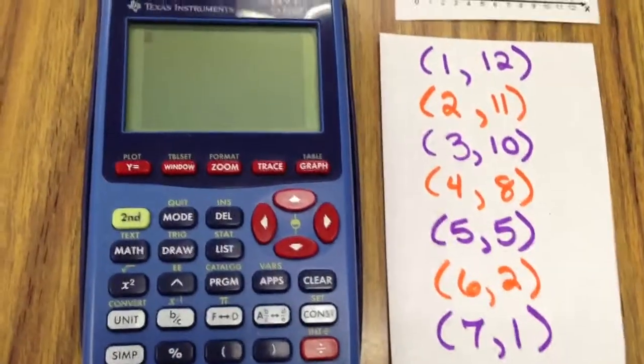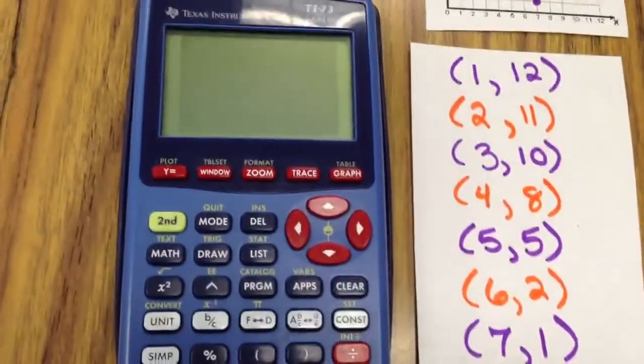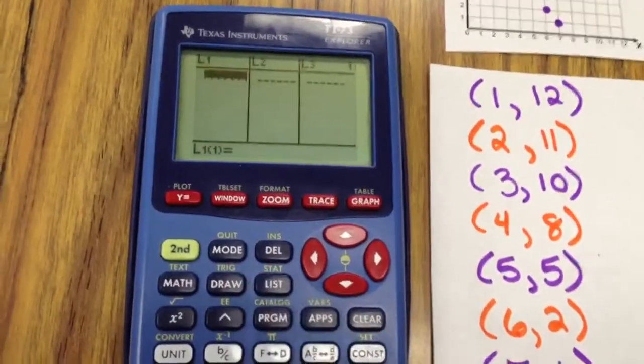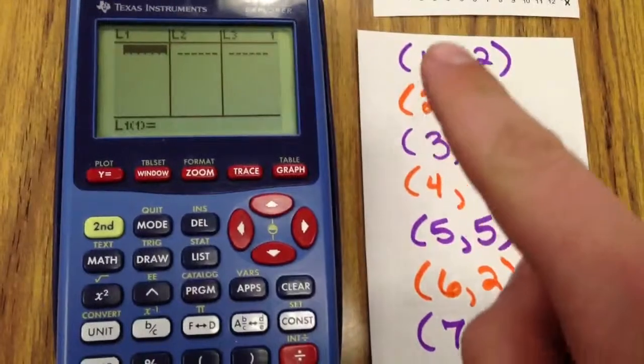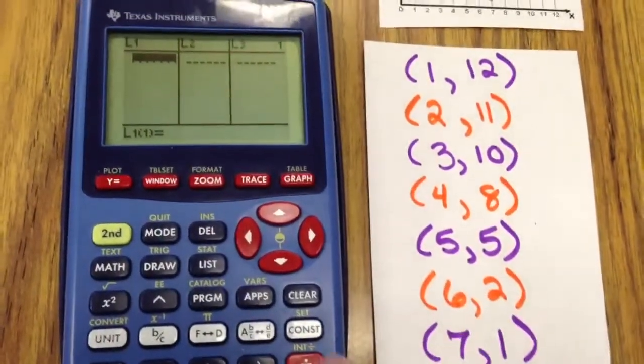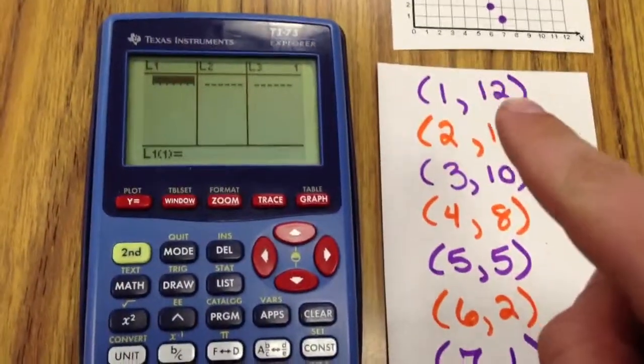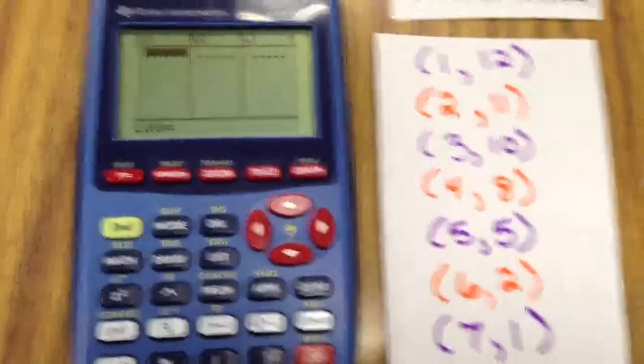This is what I'm going to do first. Y'all do this with me now. Go to the list button in the middle there. In L1, I'm going to put my domain, my x values. In L2, I'm going to put my range, my y values.